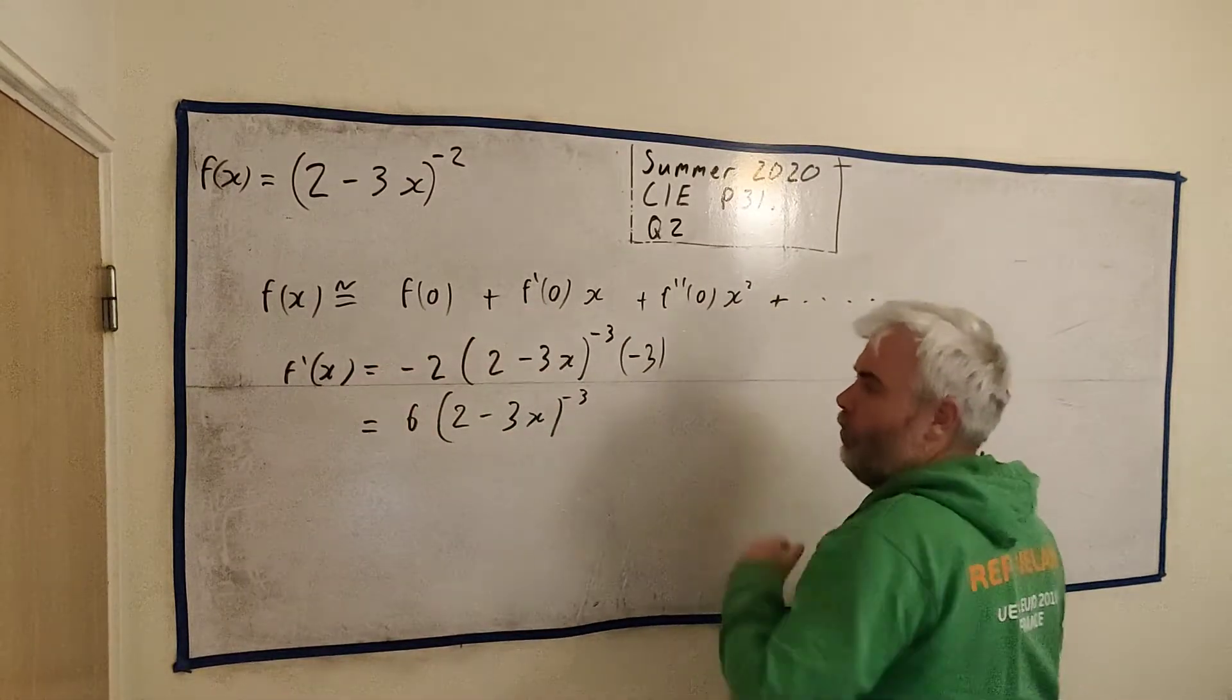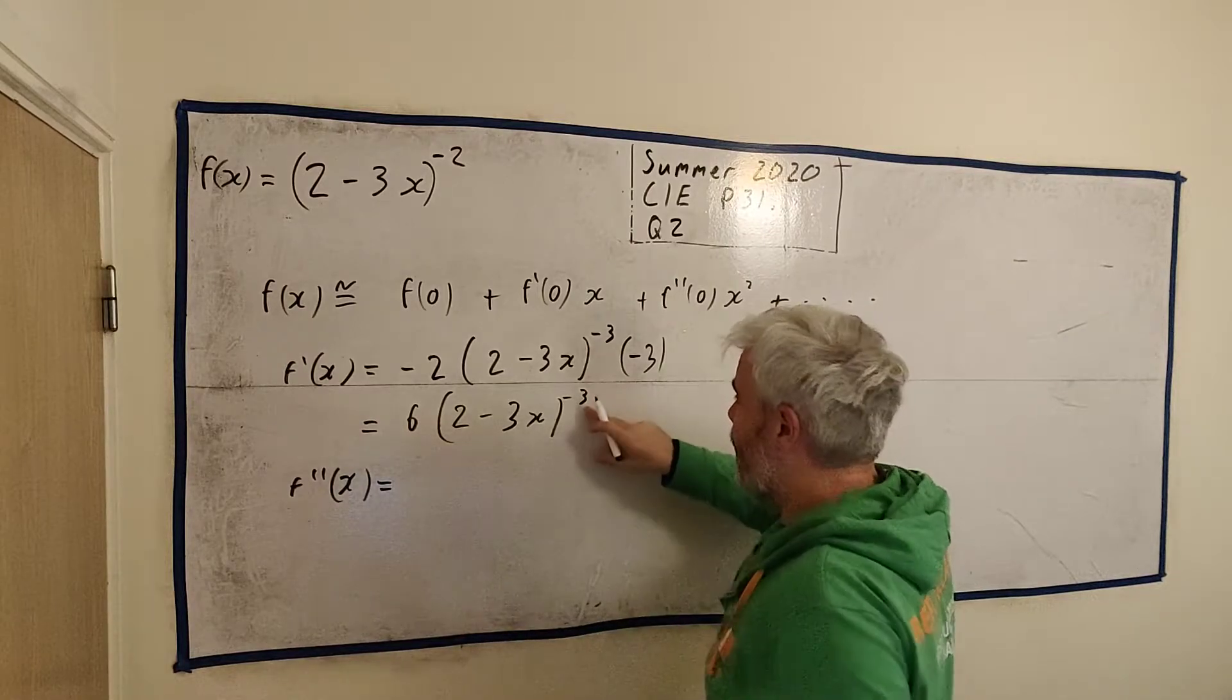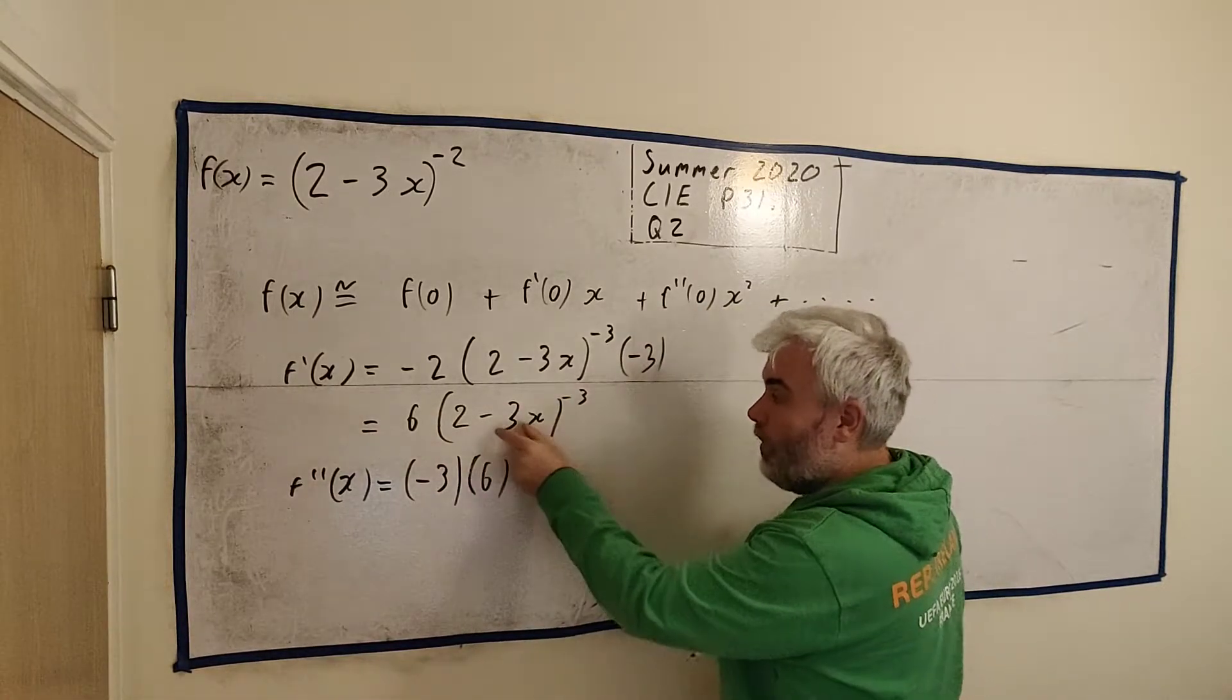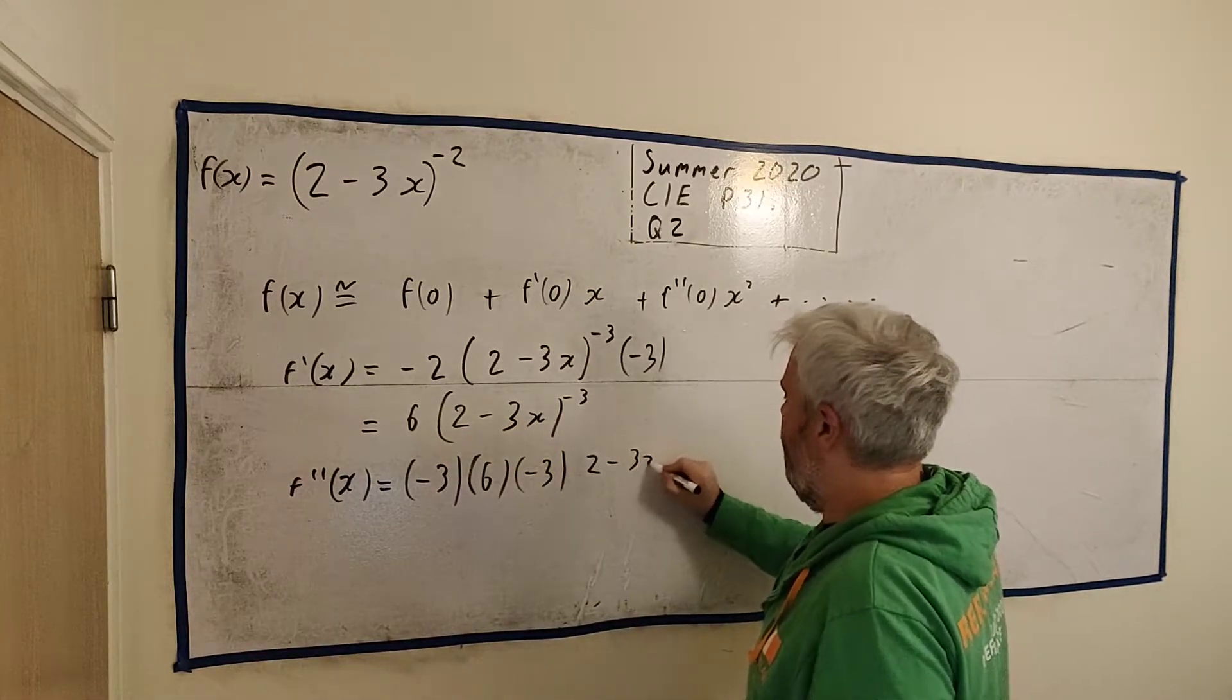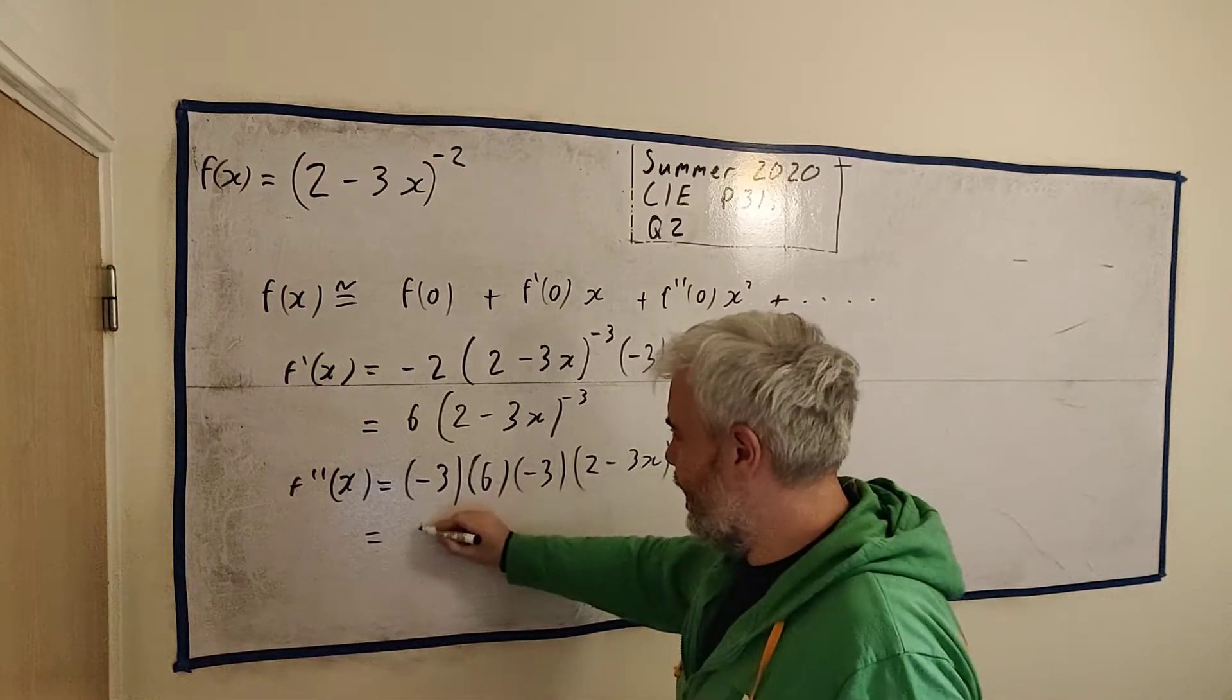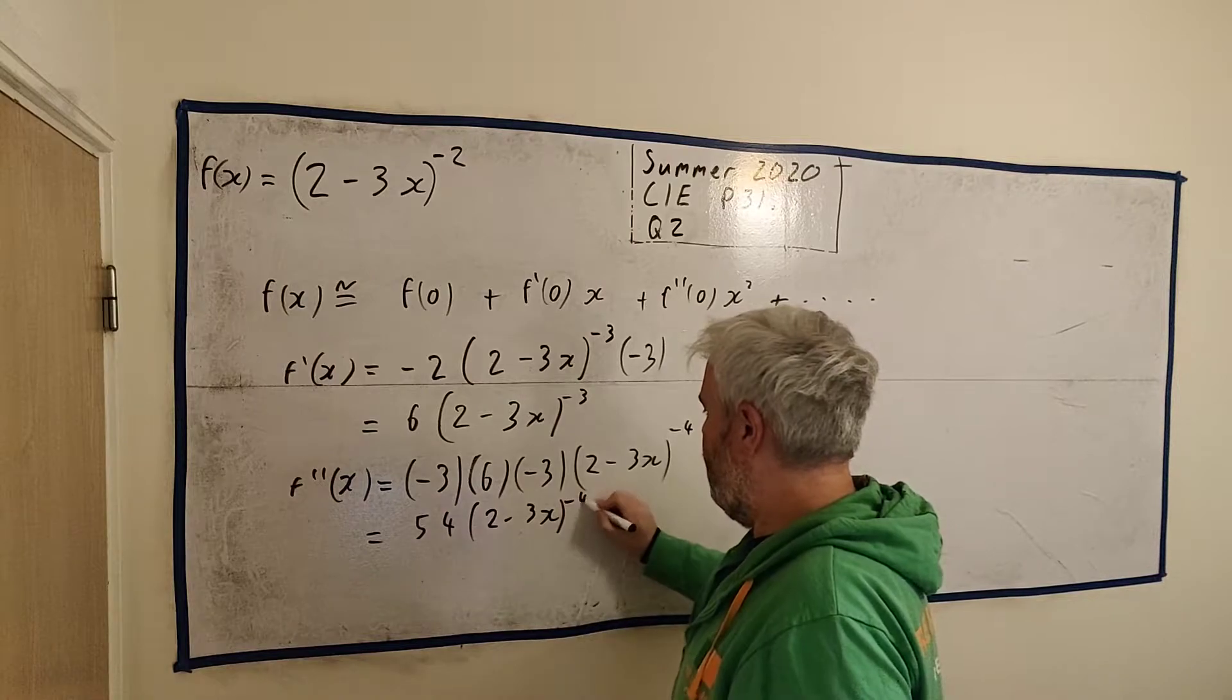And let's differentiate again. We're going to need both of them. So the second derivative is equal to, we're differentiating this one now. Minus 3 will come down. Let's do it in a different order. We know we're going to get this minus 3 again. Let's write that out front. And we'll have this term left alone. And the minus 3 will become a minus 4. Let's clean all that up. We'll get 9 times 6 is 54, and minus on a minus is plus, 2 minus 3x to the power of minus 4.